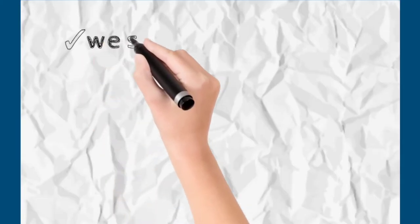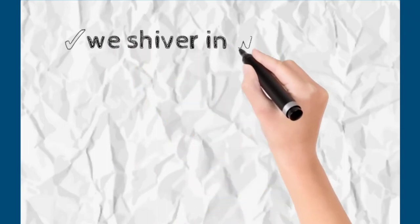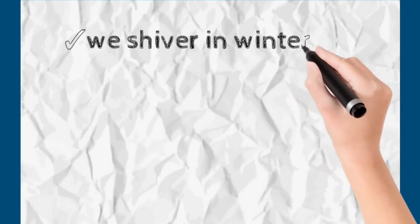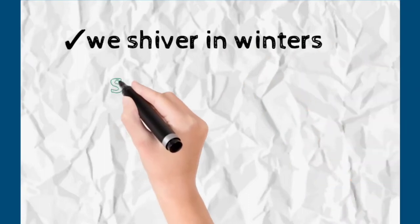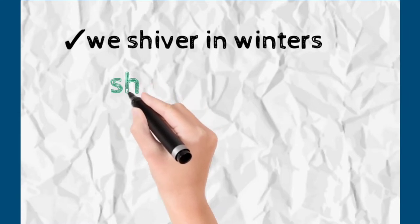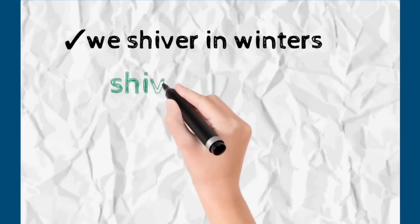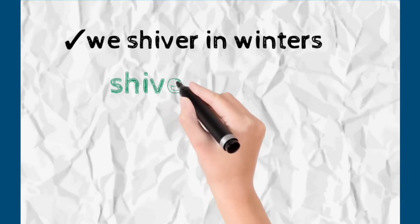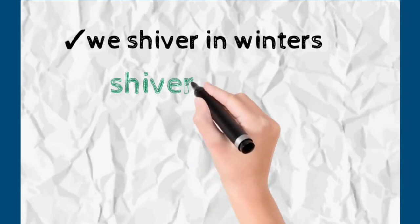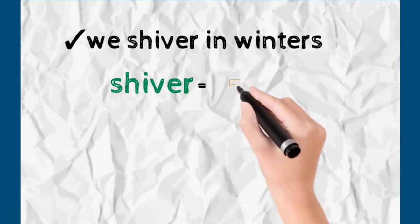We shiver in winters. Shiver का मतलब होता है कापना — तो जब बाहर ज़्यादा ठंड हो जाती है, तो हमें कपकपी छूटती है, that means we shiver. Then, बाहर जब बहुत ज़्यादा गर्मी होती है, like in the month of May and June in India, बहुत ज़्यादा गर्मी होती है, and we tend to sweat — हमें पसीना आता है.